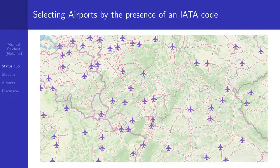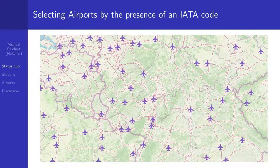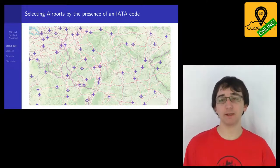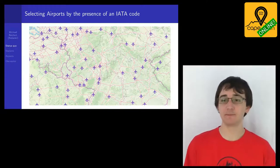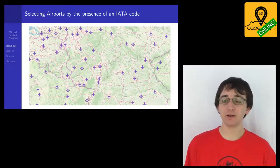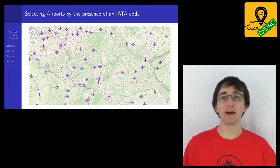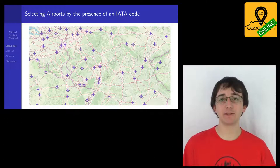Airports are another example similar to train stations. Some map styles struggle to render airports on low zoom levels. There are tags that could filter unimportant airports — for example, only more or less important airports have an IATA code. But there are still too many airports with a code, even those with only two flights per week. OpenStreetMap Carto does not render airports at low zoom levels, and even at zoom level 11 small hobby airports are indistinguishable from major ones like London Heathrow or Frankfurt.